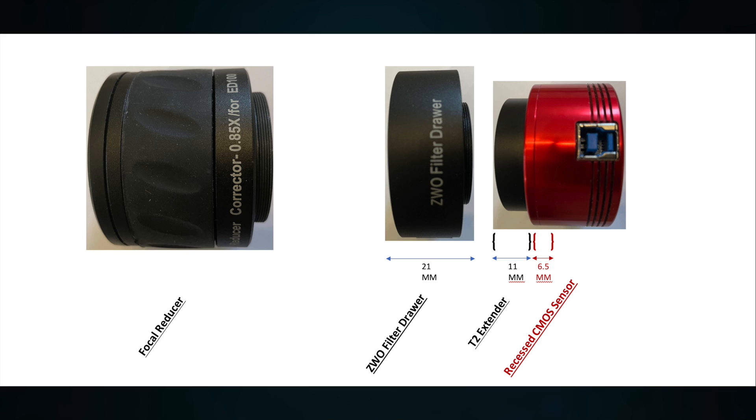So next in my image train, still working towards the focal reducer, is the ZWO filter drawer. It has a measurement of 21 millimeters. So this brings me up to a total so far of 38.5 millimeters.